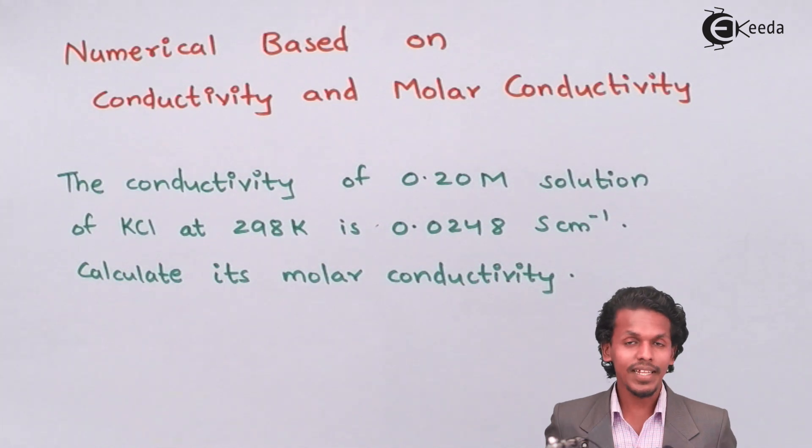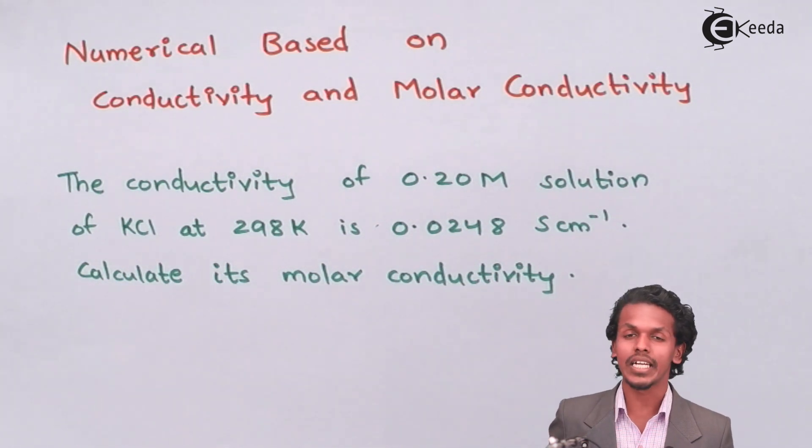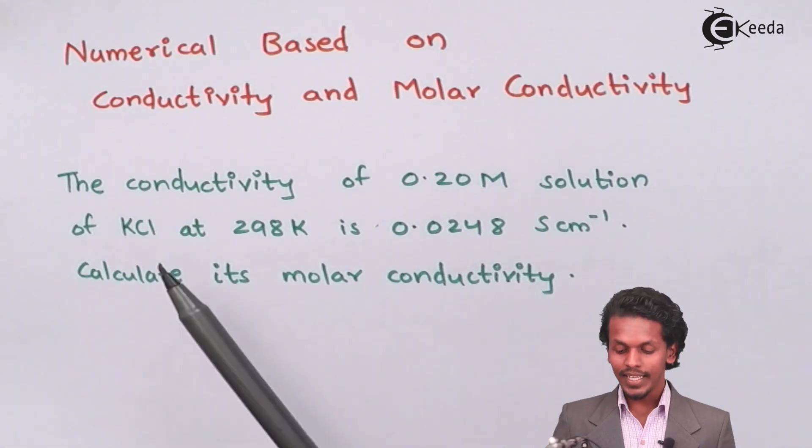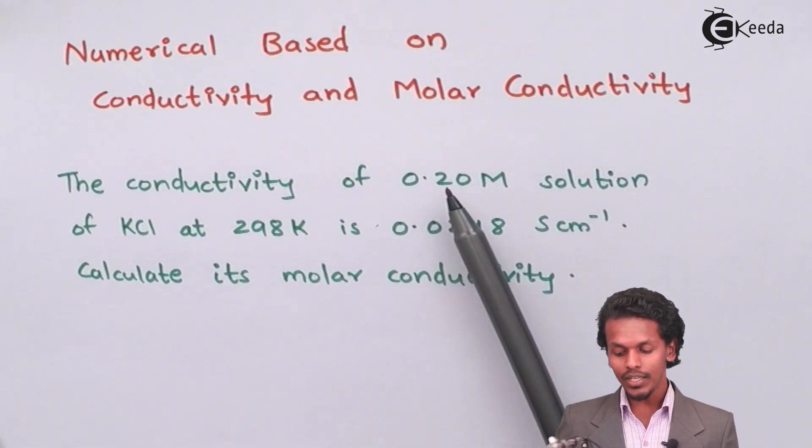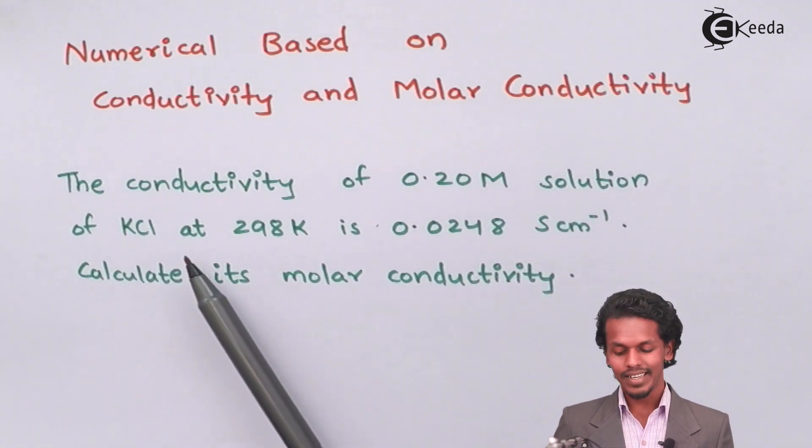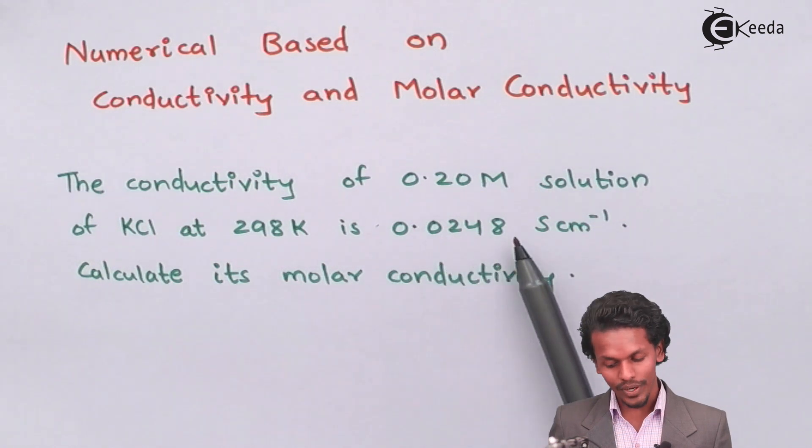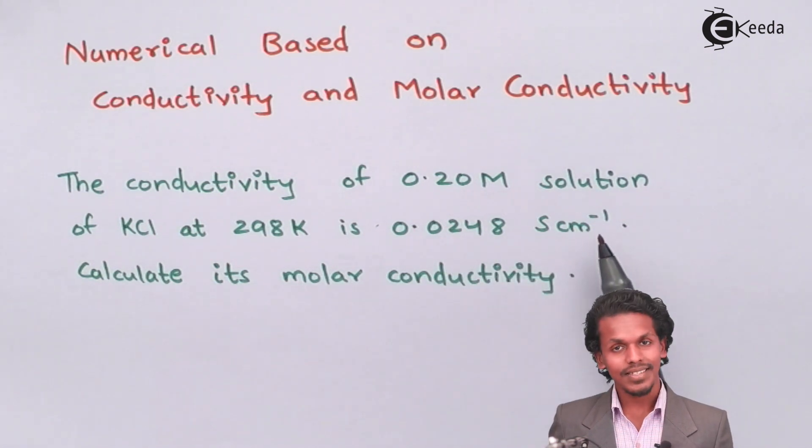The question is based on molar conductivity and conductivity of a particular solution. It says the conductivity of a 0.20 molar solution of KCl at 298 Kelvin is 0.0248 Siemens per centimeter.